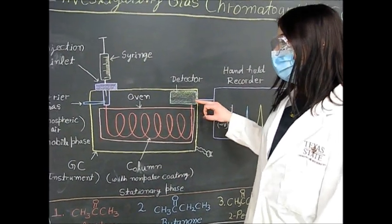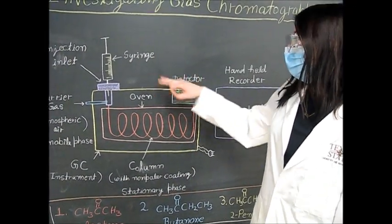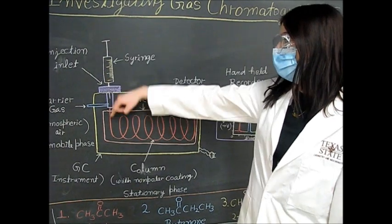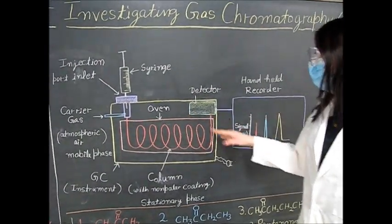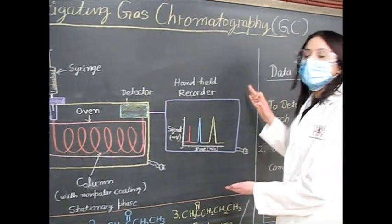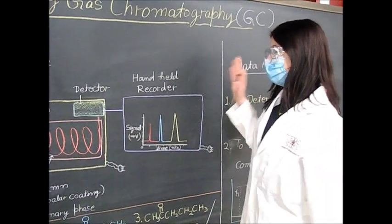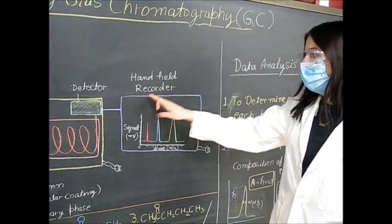The column is heated so it's inside of this oven device. You inject your compound or mixture, it runs through the column and up to this detector which we have connected to in our lab a LabQuest, and the LabQuest will produce a graph for us.